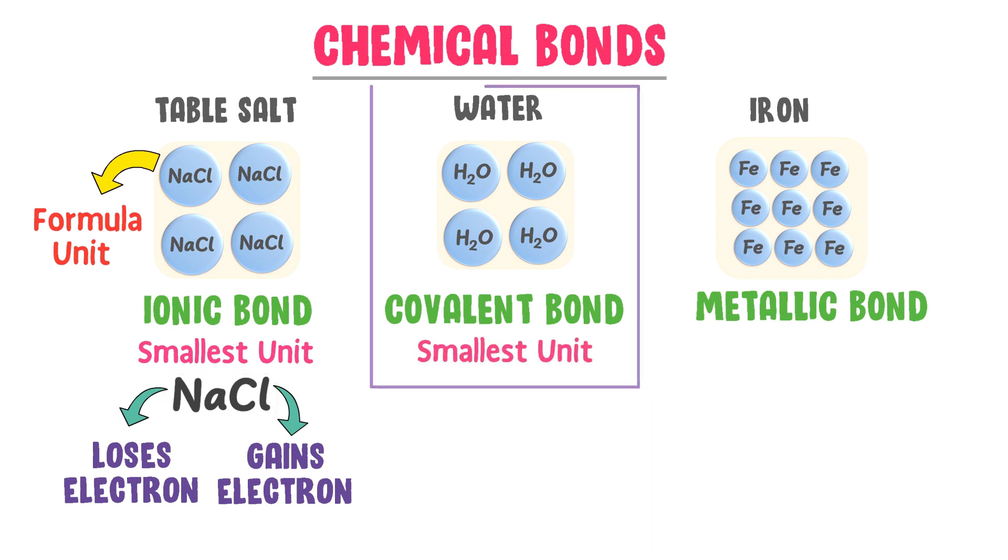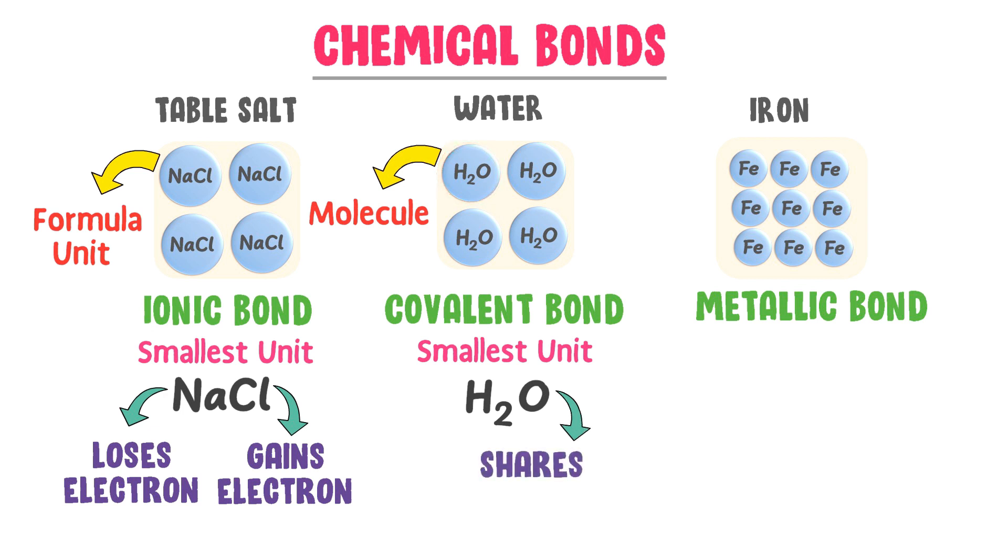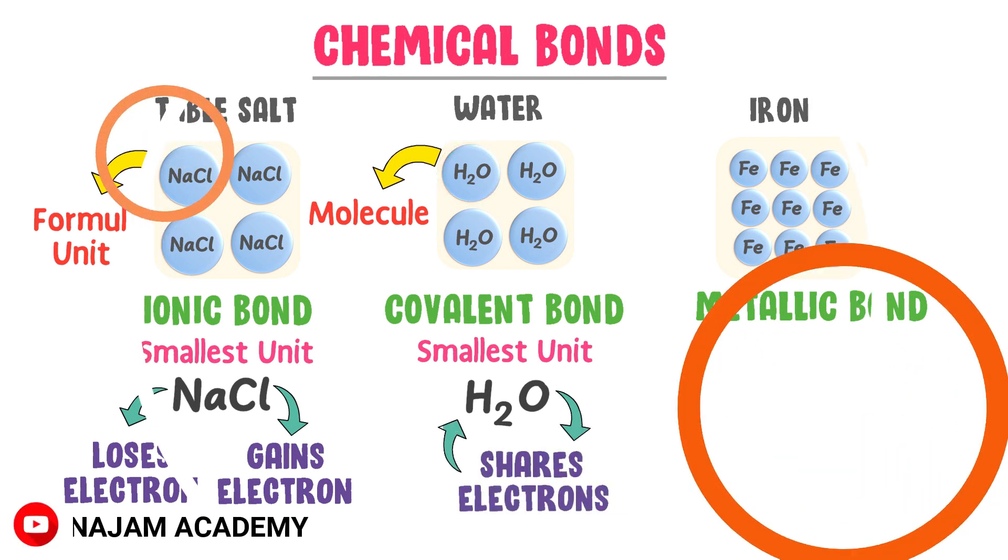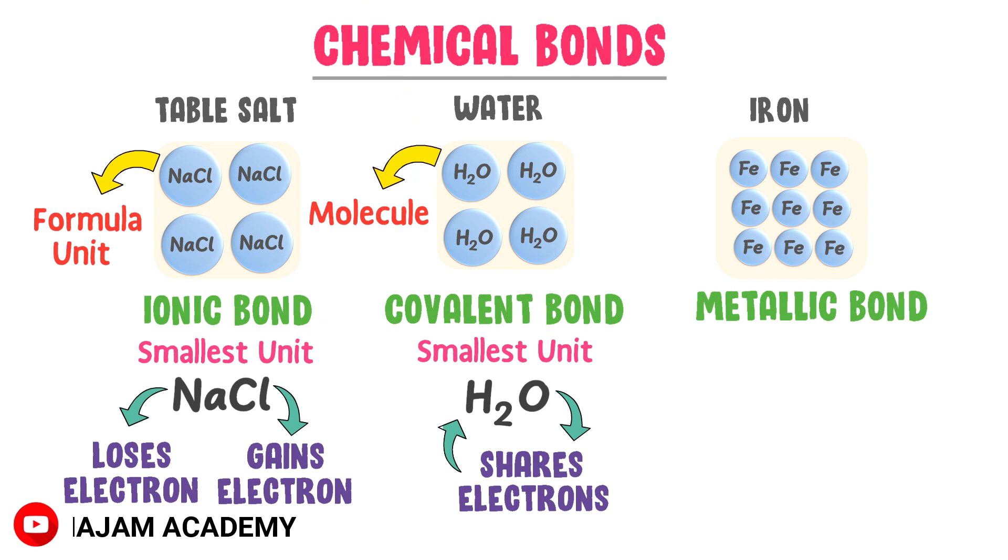Now, the smallest unit of covalent bond is a molecule like H2O. Covalent bond is formed when oxygen atoms share its two electrons with each hydrogen atom. As a result of this mutual sharing of electrons, a single molecule of water is formed.